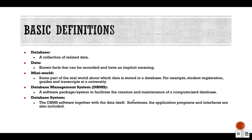Now let's look at the basic definitions. A database is a collection of related data, organized in the database. Data means known facts that are recorded and have some implicit meaning — for example, in Amazon, the data includes information about products, information about users, and the relationships between them. A mini world is a real-world domain whose data is stored in the database.